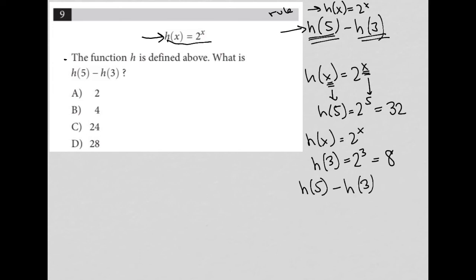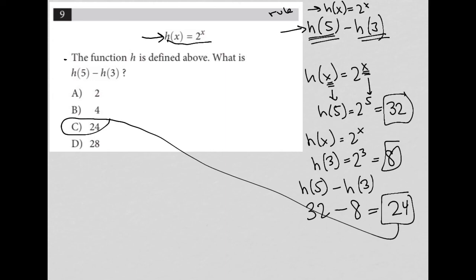and we know that h(5) = 32 and h(3) = 8, then 32 - 8 = 24. Our answer is choice C.